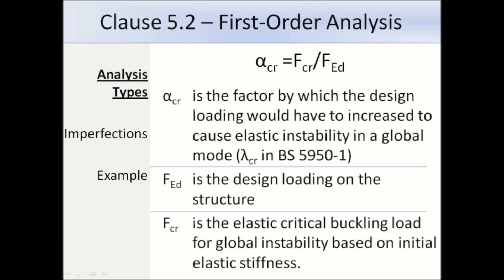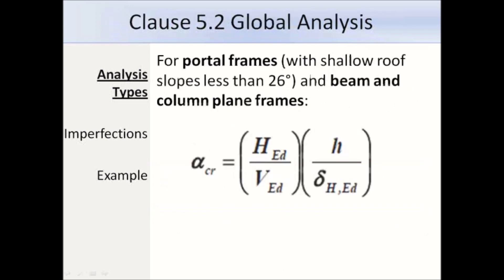Alpha crit is the ratio of the design loading on the structure, F_Ed, to the elastic critical buckling load, F_cr. In BS 5950 this would have been lambda crit. If the loading F_Ed is close to F_cr then there is instability, but if F_Ed is much less than F_cr then we have little instability. For regular multi-storey frames alpha crit needs to be calculated for each storey, but it is the base storey that will normally control. For portal frames with shallow roof slopes less than 26 degrees and beam and column plane frames, we can use a specific expression to work out alpha crit.